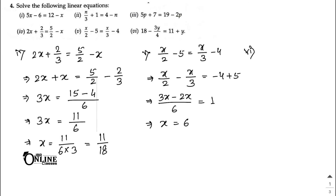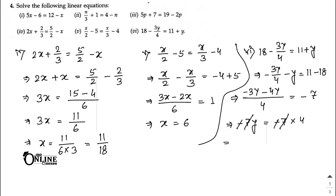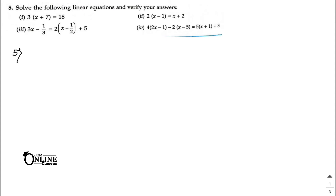Number six: 18 − 3y/4 = 11 + y. Rearranging: −3y/4 − y = 11 − 18 = −7. Taking LCM as 4: −3y − 4y = −28, so −7y = −28. The negatives cancel and 7 divides 28, giving y = 4 as your answer.